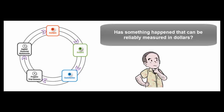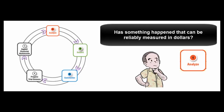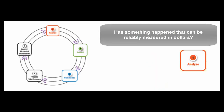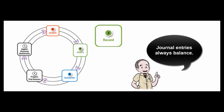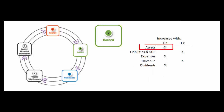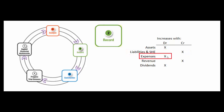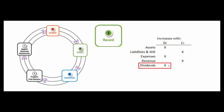Remember our accounting cycle — our first step is to analyze a business transaction. If there is something that can be reliably measured in dollars, we'll record it using journal entries, debits and credits. Our rules are that assets increase with debits, liabilities and shareholders' equity accounts increase with credits, expenses are debits. The opposite of expenses is revenue, so it increases with credits. And dividends start with the letter D, which reminds us that they're also recorded with debits.